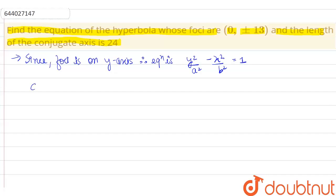Now coordinates of foci are (0, ±C), but according to question we have (0, ±C) equals to (0, ±13). Therefore, value of C is 13.